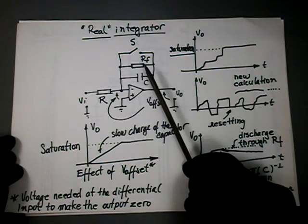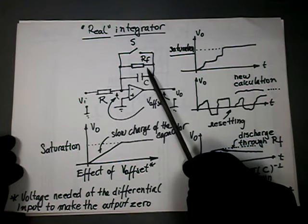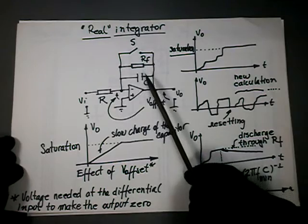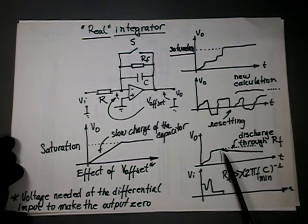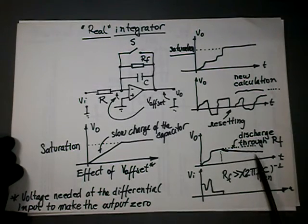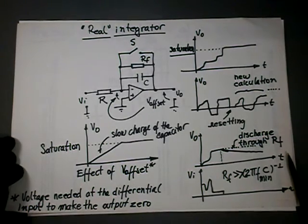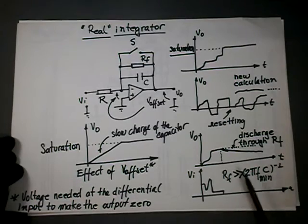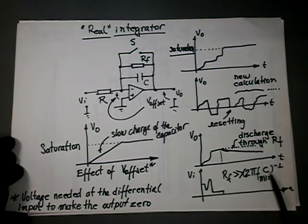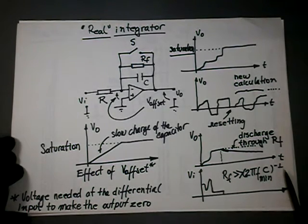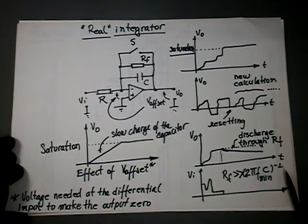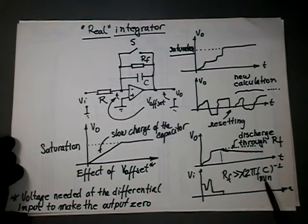But often a real integrator circuit will have a large resistor in parallel with the capacitor so that any value accumulated can be automatically reset after a sufficiently long time. This will obviously affect precision, so its resistance will be calculated with a value much greater than the impedance of the capacitor to the minimum frequency present at the input signal.